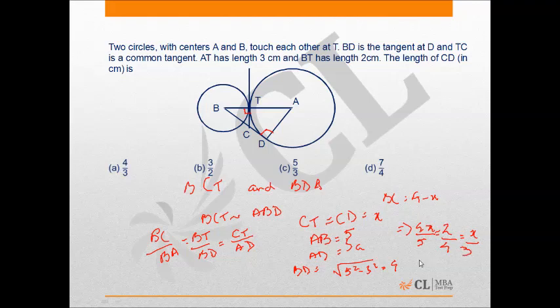So, X is equal to 6 upon 4 cm which is equal to 3 by 2. Hence, option B which is 3 by 2 is the correct answer in this case.